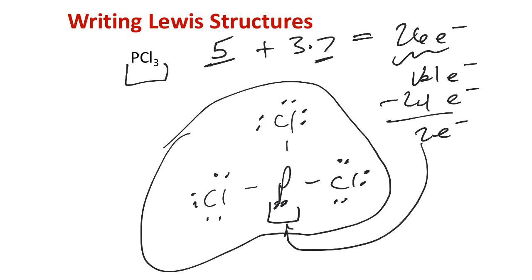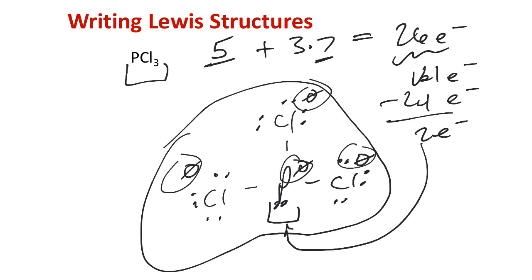The last consideration is whether we have the ability or need to make any multiple bonds — we don't, because we have zero formal charges across this molecule. The phosphorus has a zero formal charge, and the formal charges must all sum up to the charge of the molecule, which is zero. The octet is satisfied on phosphorus, so there's no need to consider any other structures for PCl3.